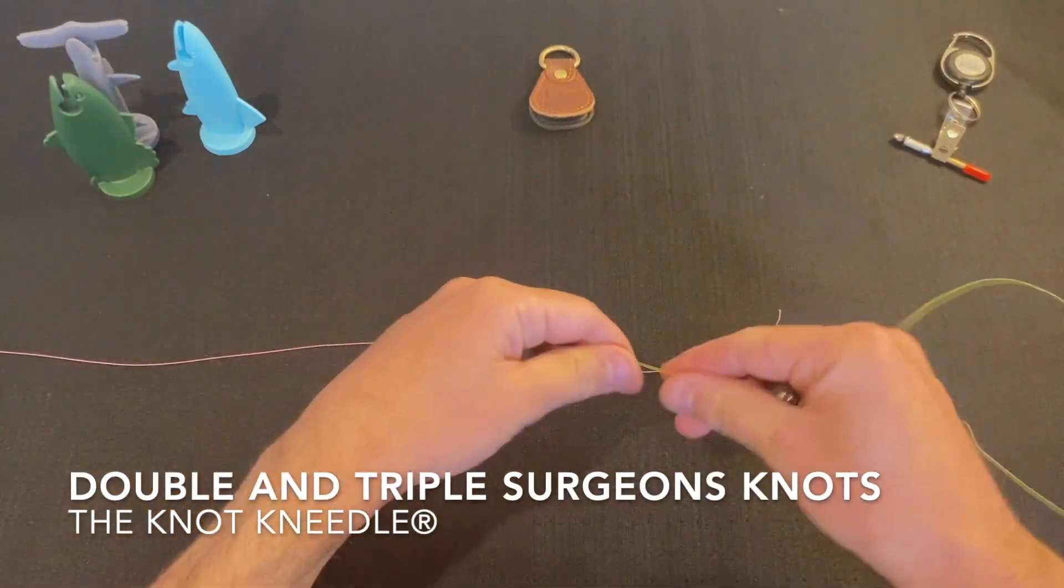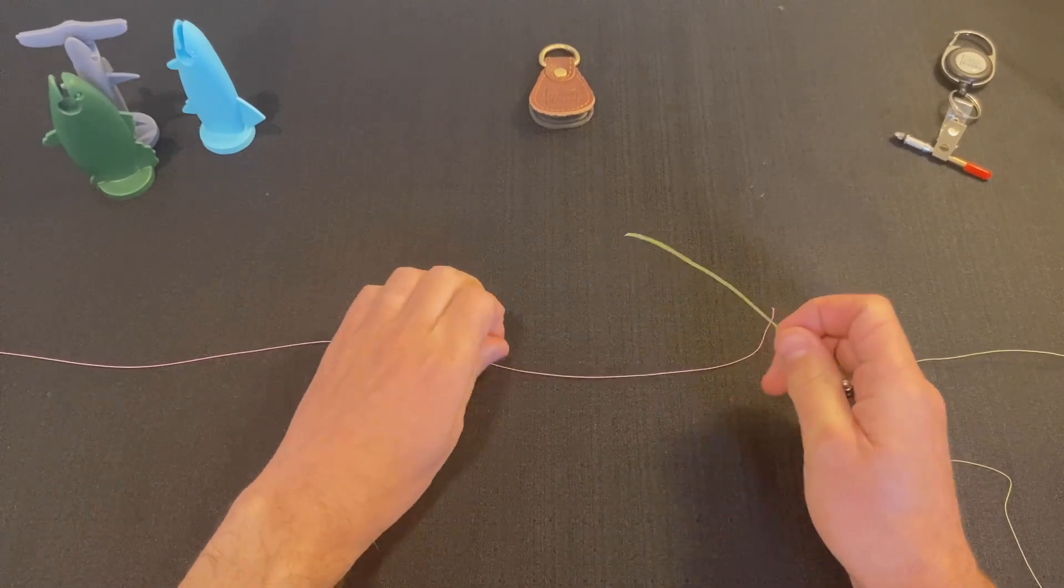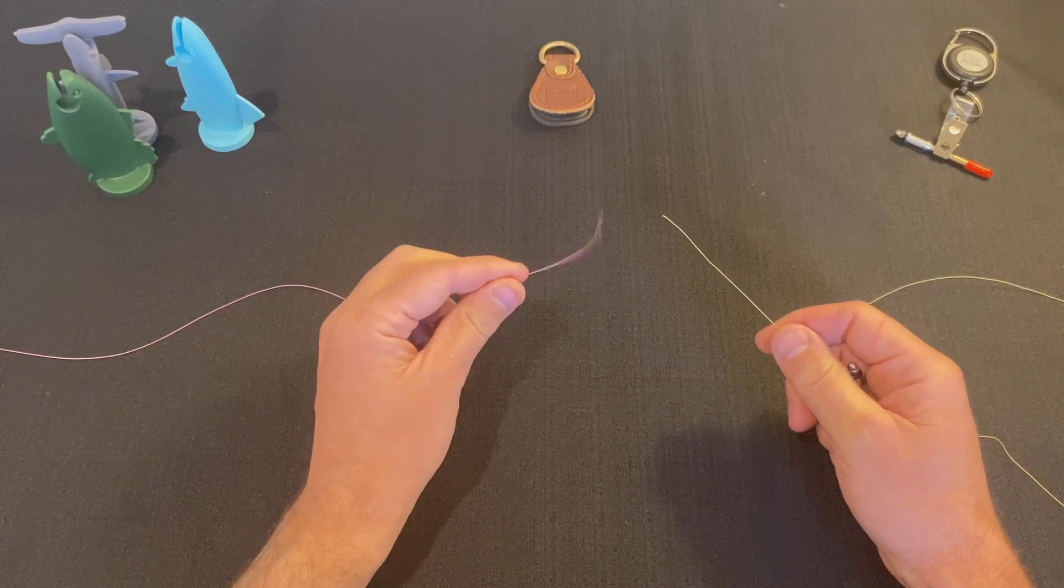Hi, I'm going to show you how to tie a double and triple surgeon's knot using the knot needle. This knot's used to attach tippet to leader or two different size diameter lines.